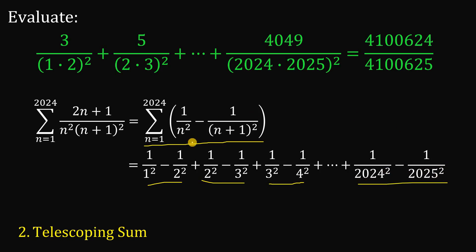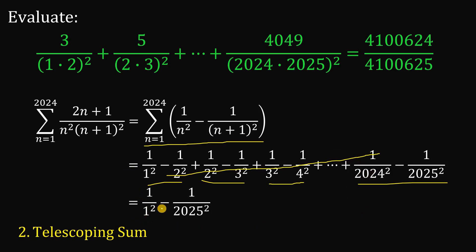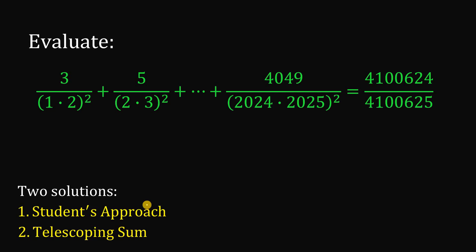We can eliminate the interior terms — this is called the telescoping sum — because all terms cancel out except the first and last: 1 over 1 squared minus 1 over 2,025 squared. Again, simplifying this we arrive at the same result: 4,100,624 all over 4,100,625. This is our answer.